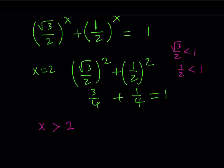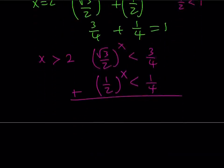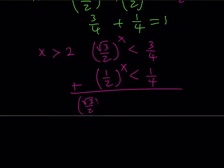So, when you raise them to powers that are greater than 2, you're going to get smaller and smaller values, right? As x approaches infinity, basically, these quantities are going to approach 0, obviously, right? So, they're going to get smaller. What is that supposed to mean? Well, it means that this expression here is going to be less than, when x is greater than 2, this expression is going to be less than 3 fourths, because it's 3 fourths at 2. And the other expression, 1 half to the power x, is going to be less than 1 fourth. So, when you add these two expressions side by side, which is supposed to equal 1 based on our equation, their sum here is basically going to be less than 1. So, that means it's not going to equal 1.